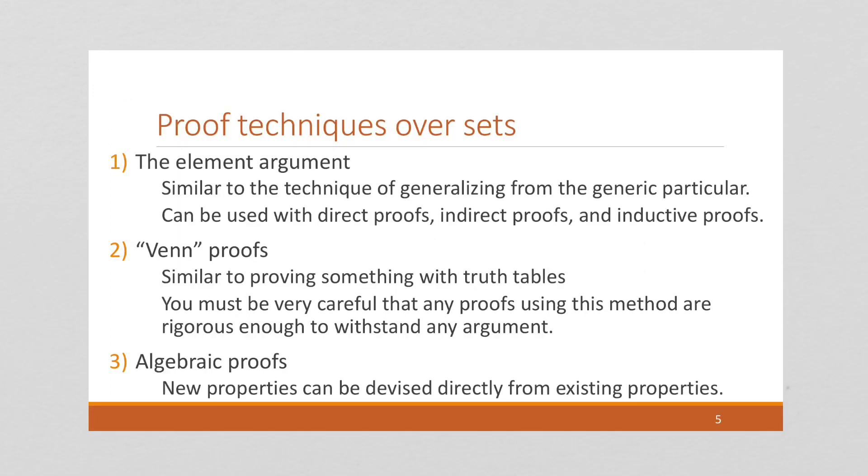And finally, let's talk about proof techniques over sets. So all of these laws exist because somebody sat down and proved them. And we are also going to learn how to do our own proofs over sets. And there's three ways this is typically done. The first is called the element argument. So this is very similar to when we were doing direct proofs or indirect proofs, where we generalized from the generic particular.